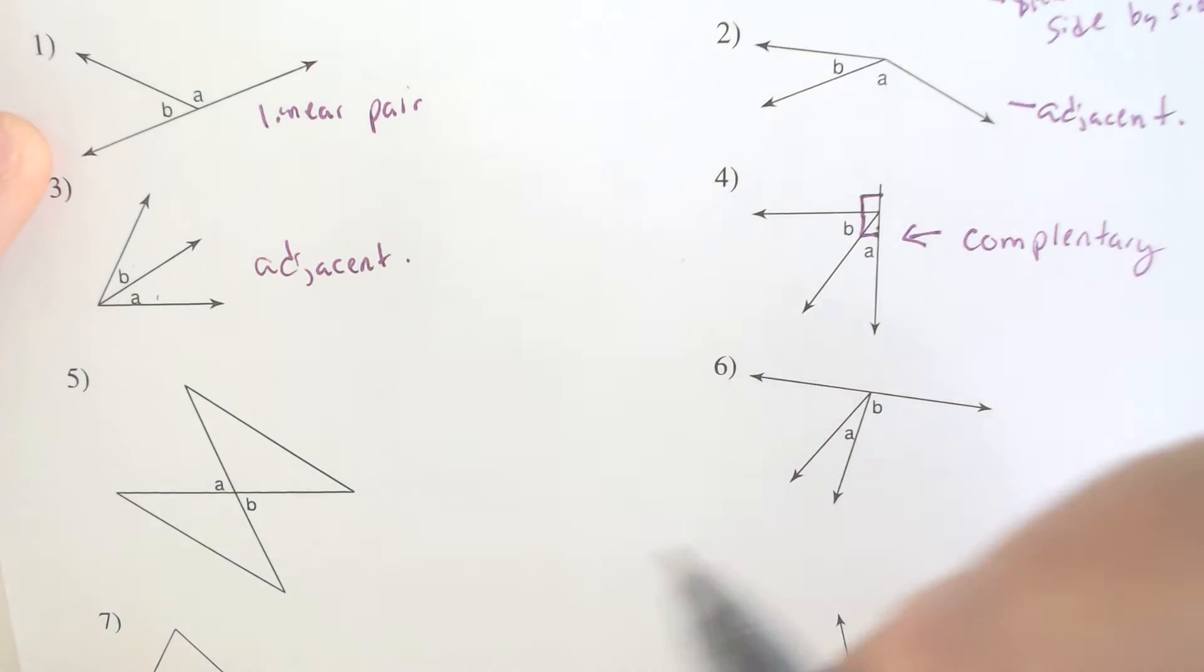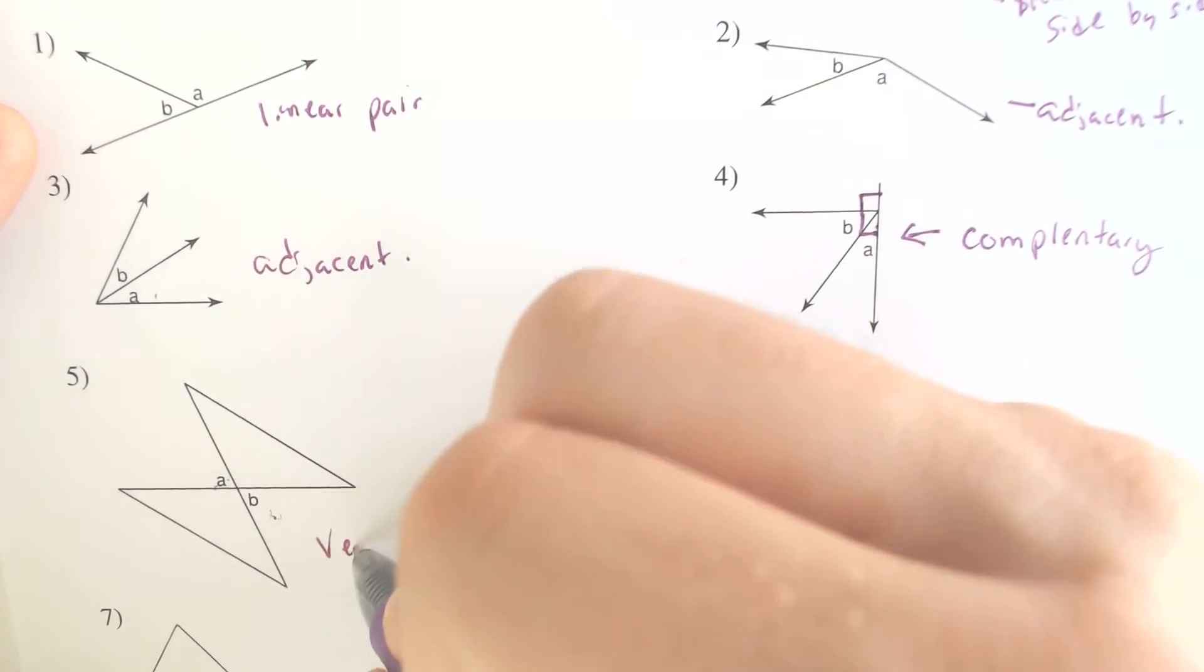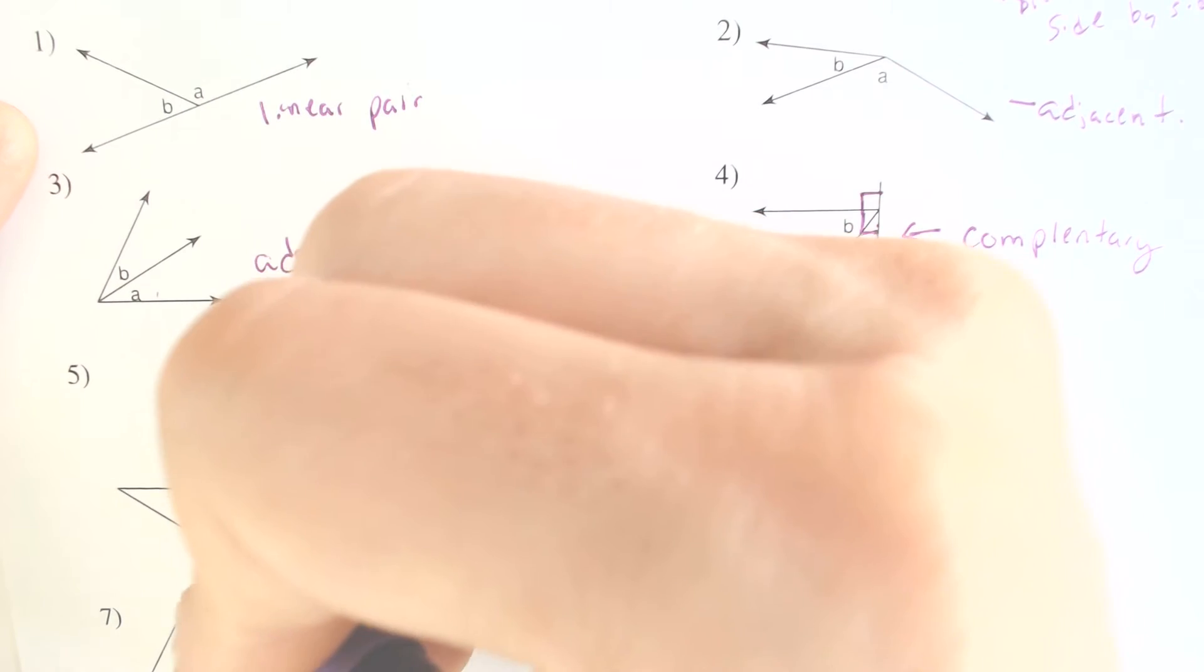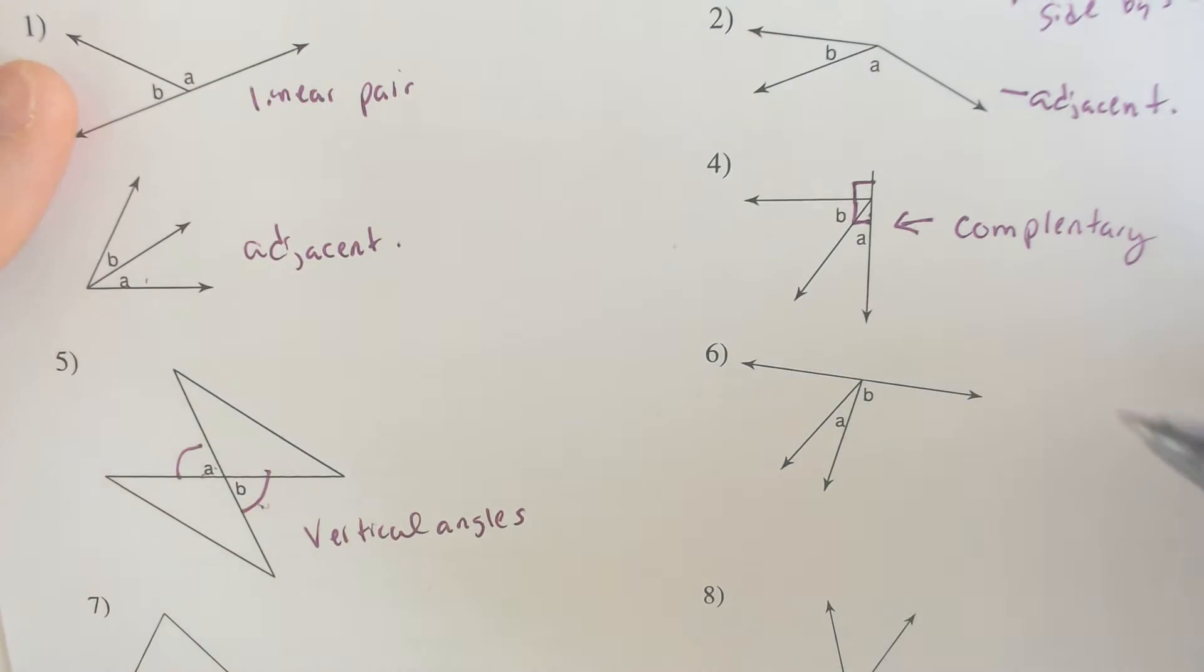Let's do some vertical angles. We got A and B here. A and B are across from one another, and if you are across from one another you are vertical angles, and vertical angles are equal to each other. So this angle over here and that angle over there are equal, and you can put the little equal symbols there if you'd like to.